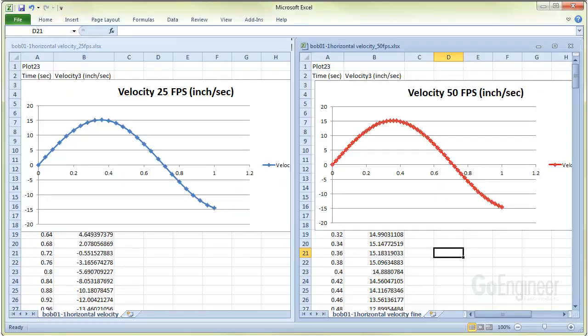Here are the Excel graphs side by side. The 25 frames per second output is on the left and the 50 frames per second output is on the right. You can observe the higher fidelity and smoother curve on the right.